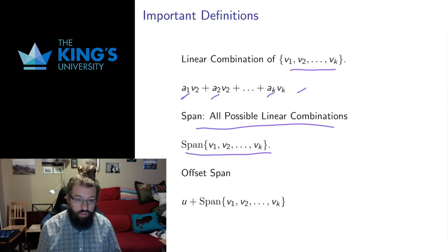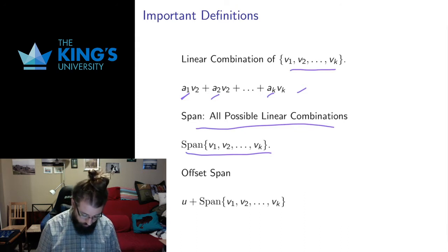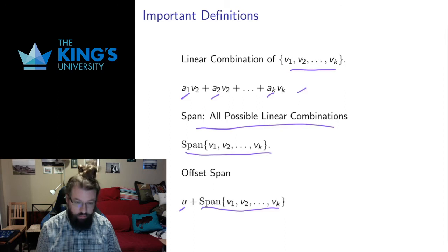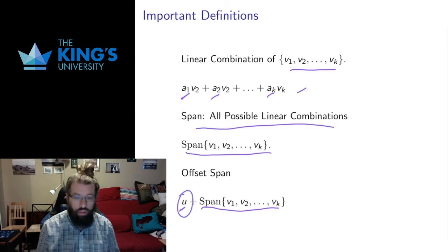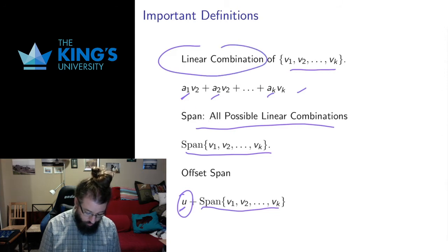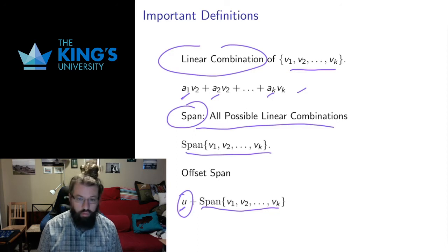I can also have an offset span, which is a useful thing to talk about for properties we'll get to in a future video. An offset span is the span of some number of vectors plus some other fixed offset. So if you think of span as a particular space, the offset just sort of moves it around — you can think of this as shifting the space by a vector u, and we call that shift an offset. The definitions of linear combination and span are two definitions we're going to use over and over again in the course, so make sure those definitions feel comfortable.